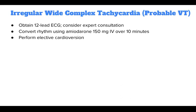For regular wide complex tachycardia, or probable VT, obtain a 12-lead ECG and consider expert consultation. Convert the rhythm using amiodarone 150 mg IV over 10 minutes, and perform elective cardioversion.